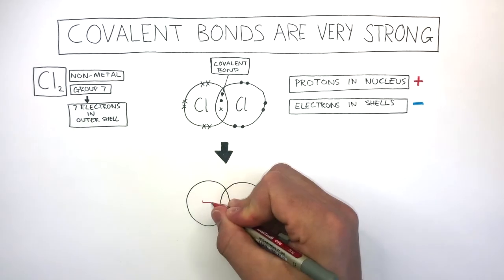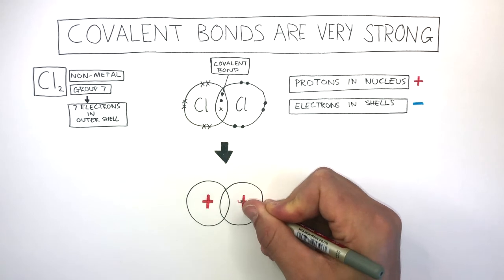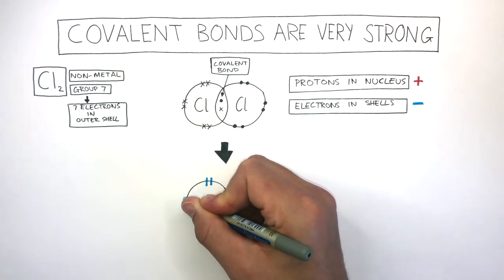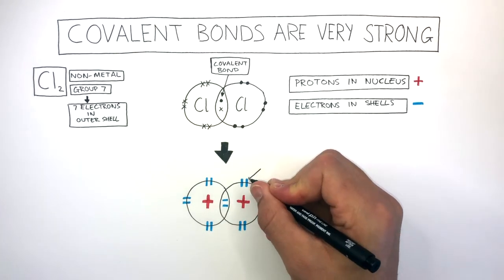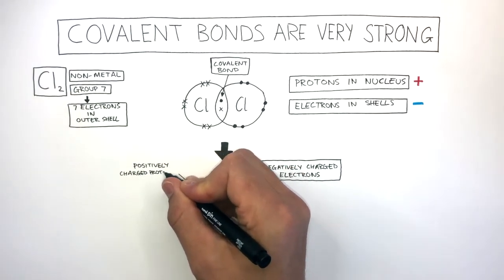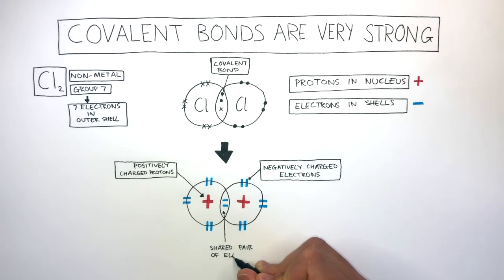Well the protons in each nucleus are positively charged, represented by the red crosses. And then there are negatively charged electrons in the shells, represented by these blue lines. These are negatively charged electrons, and these are positively charged protons. And this is the covalent bond, a shared pair of electrons.